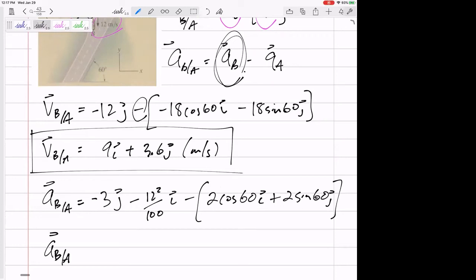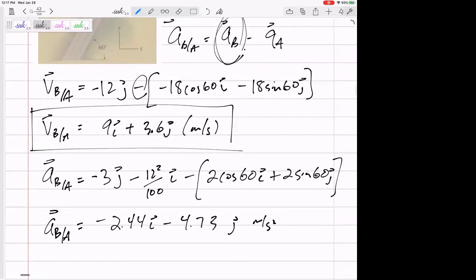Acceleration of B slash A. I've got negative 2.44I minus 4.73J. Need units? Please pay attention to your units. If it's in feet, I need feet per second. Feet per second squared. It's a real easy or hard way to lose a point on your test. Did everything completely right, but you put meters per second when it should have been meters per second squared, or you put meters when it should have been feet. So pay attention to your units.